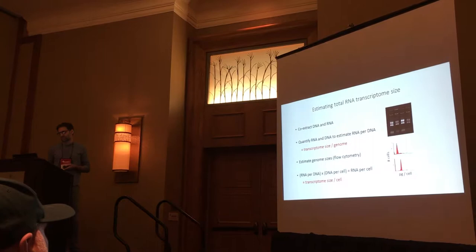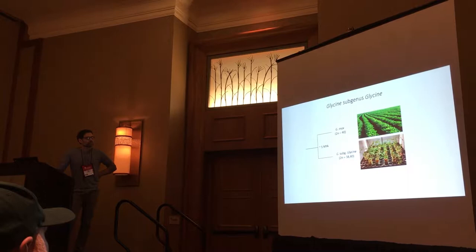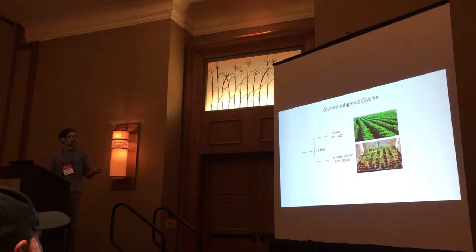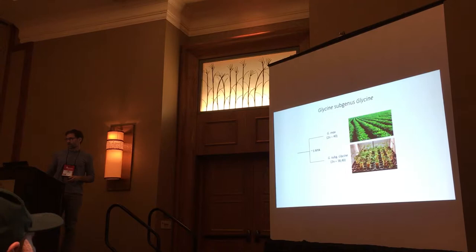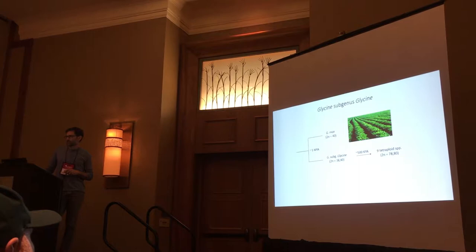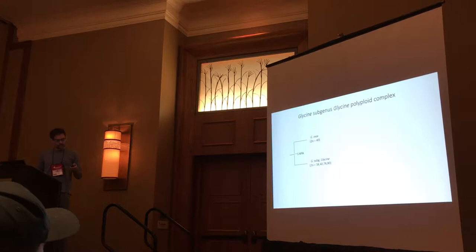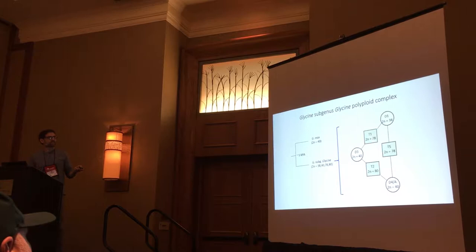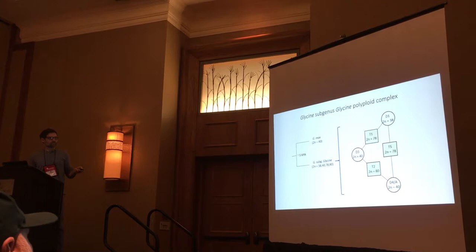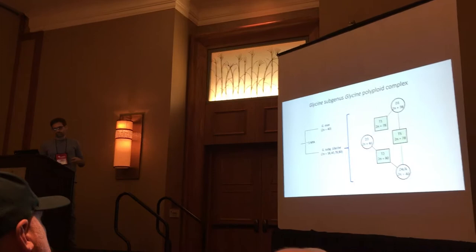We've done this in a polyploid complex in the genus Glycine, which includes cultivated soybean, or G. max. The subgenus Glycine diverged from soybean about five million years ago and includes a number of diploid species that have been crossed in various combinations to produce nine different polyploid species, all within the last half million years or so. This is a powerful system for looking at recurrent patterns in response to genome duplication. I'm showing three of the polyploids I'll be talking about today — T1, T2, and T5 — flanked by their diploid progenitor species. For example, T2 formed by hybridization of the D3 and D4 diploids.